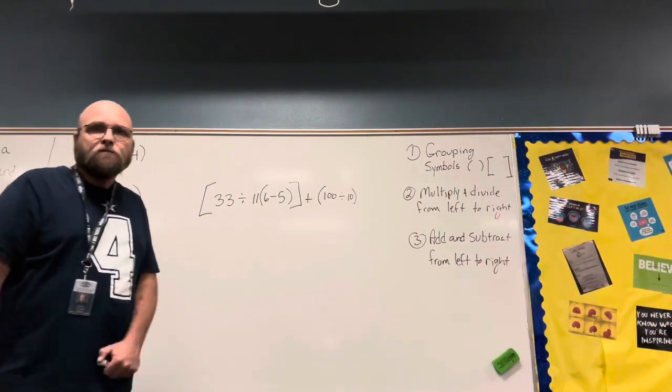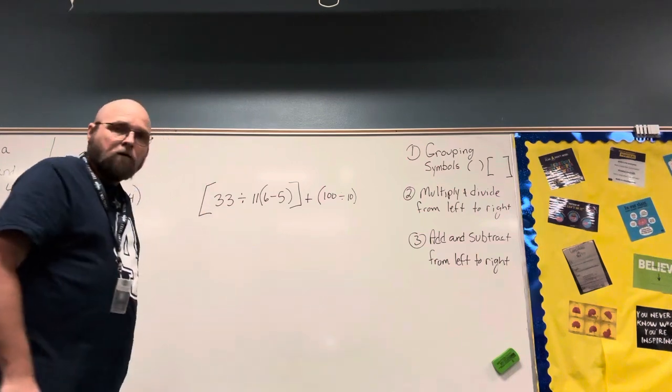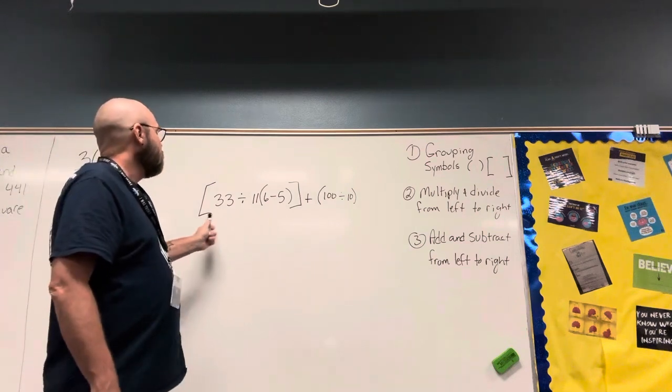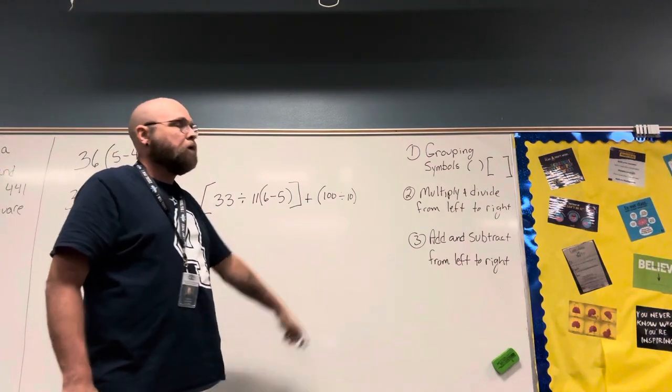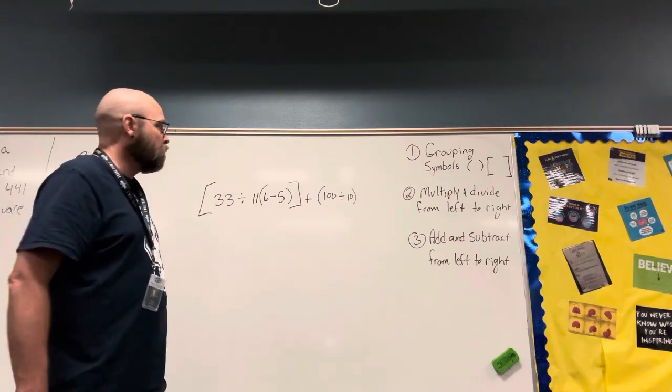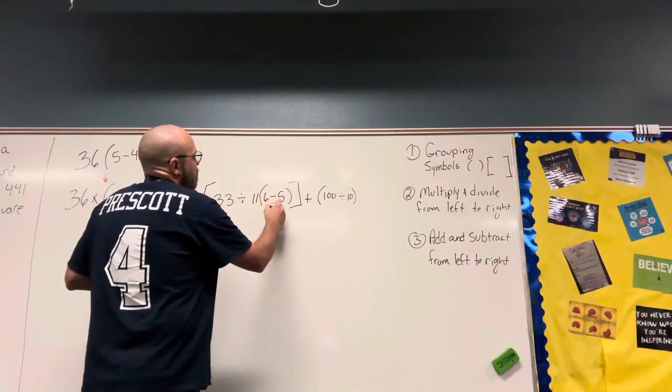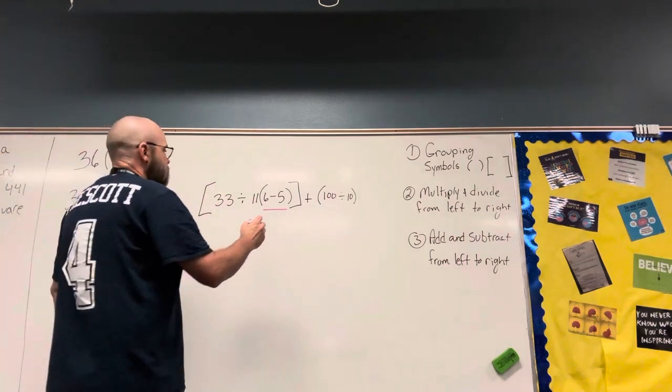Alright, order of operations video four for today. We start with our grouping symbols. Here we have brackets and parentheses. Always start inside the brackets. If we have more than one grouping symbol, we start inside the brackets. Inside the brackets we have our parentheses: 6 subtract 5. Well, that is easy.